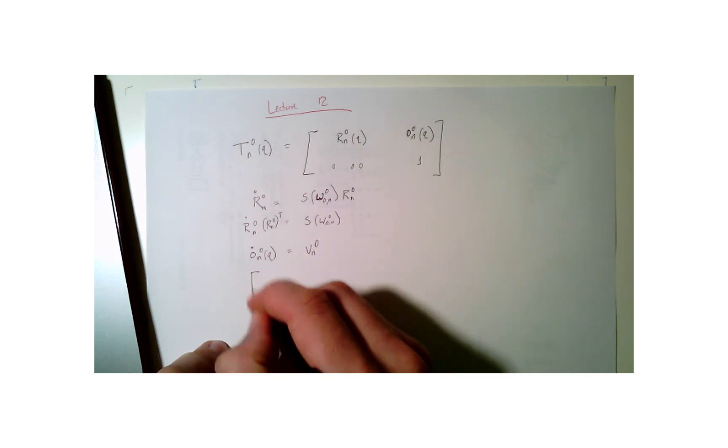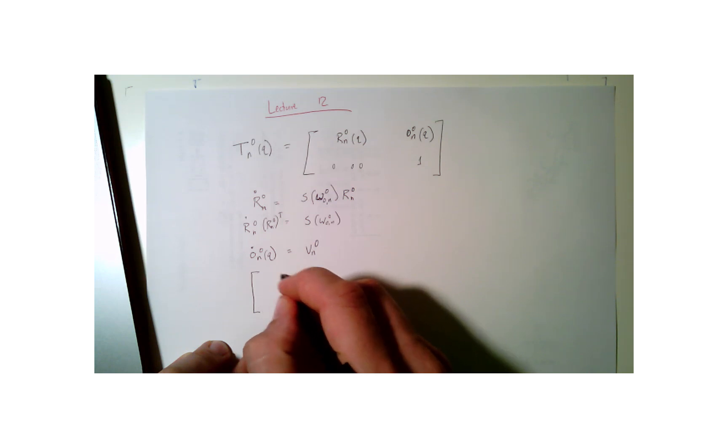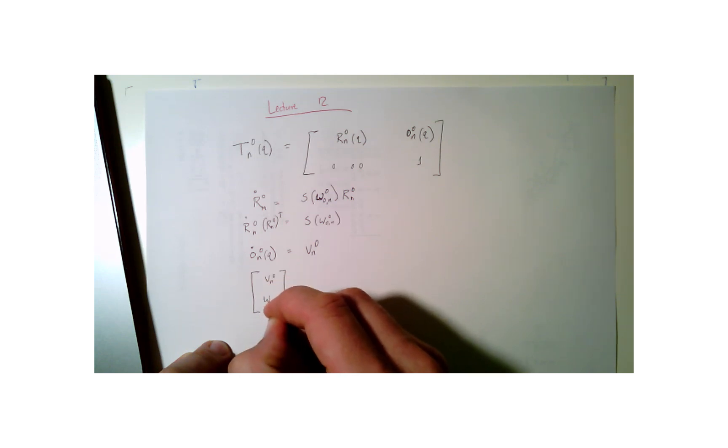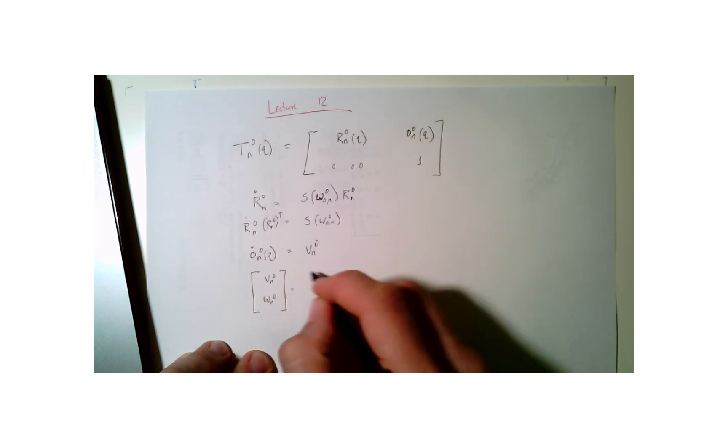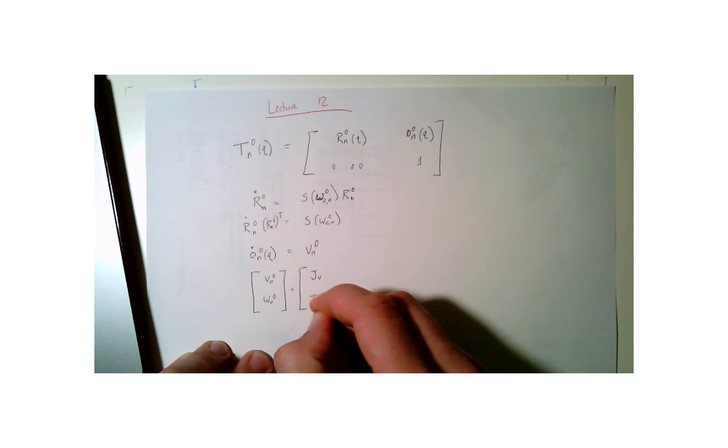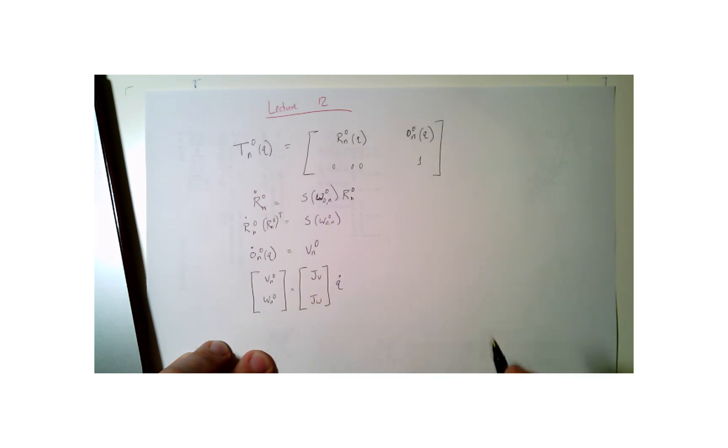And so, remember, our goal is to figure out what v n of 0 and what omega n of 0 is equal to. And they are equal, we'll call the top half j v, bottom half j omega, and multiply each of those by q dot.